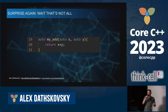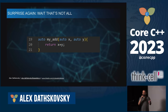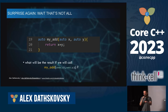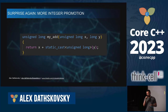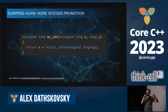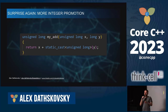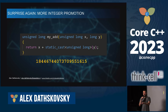Another surprise: a generic function 'myadd' with auto return type returning x plus y. If we call it with uint64 value 1 and int64 value minus 2, integer promotion rules apply — when you mix signed and unsigned types of the same size, the signed type is promoted to unsigned. So int64 minus 2 becomes uint64, and 1 plus that gives a huge positive number, not minus 1.